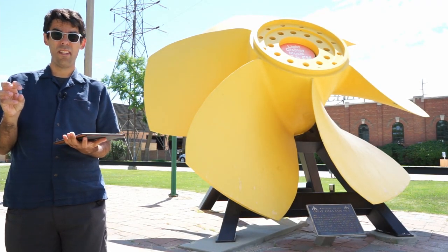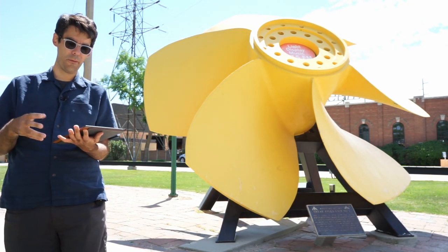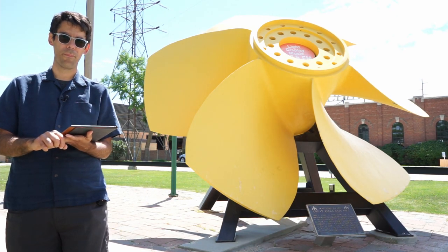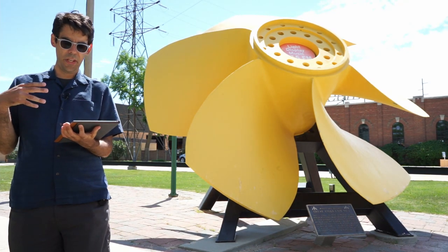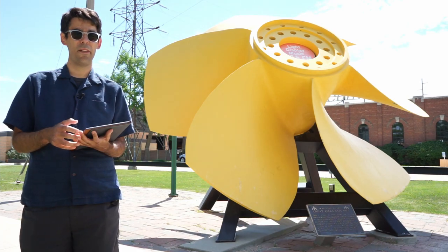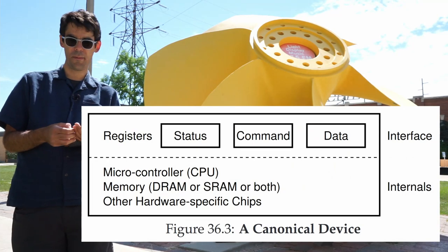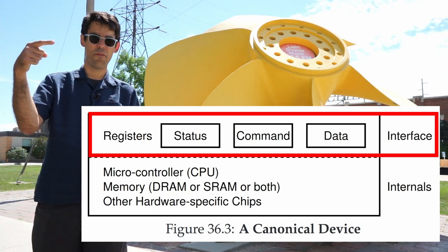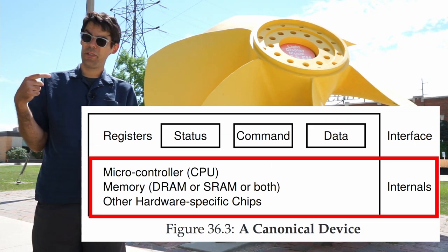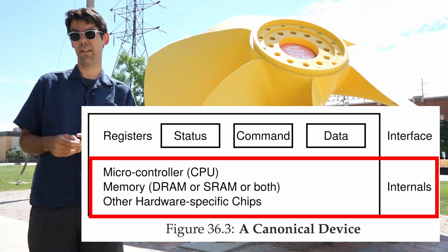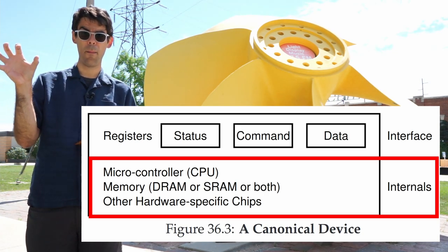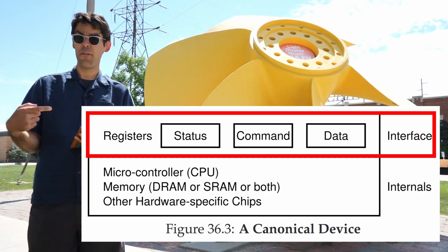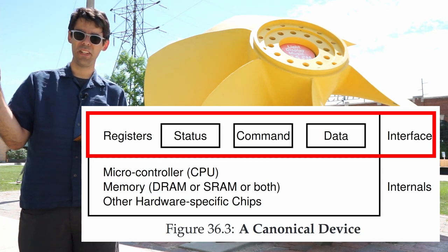We're going to limit ourselves to one device — a canonical device that looks like a hard drive. Let's look at figure 36.3. This canonical device is divided into two areas: the interface and the internals. The interface has registers — status, command, and data — and we'll look at what each of those means soon. This looks a lot like what we've been taught in software design: build an interface that exposes a set of operations, and then you've got an implementation beneath that.